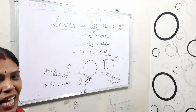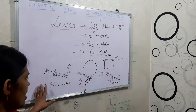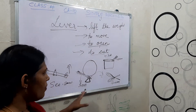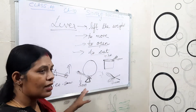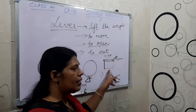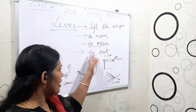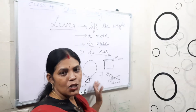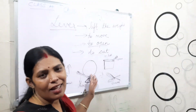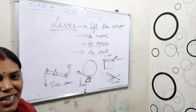So what are the examples? To lift the weight — seesaw. To move the weight — the rod with a small stone. To open the lid — the spoon. And to cut the things — scissors. So all these things are examples of lever.